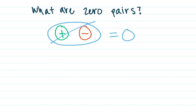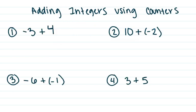This is a really big deal for adding integers, because what we're going to be doing is canceling out zero pairs. That's how we add integers together. So let's go ahead and take a look at that.